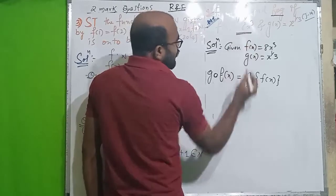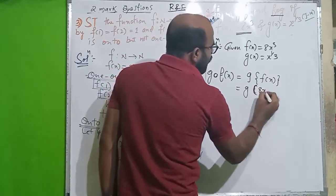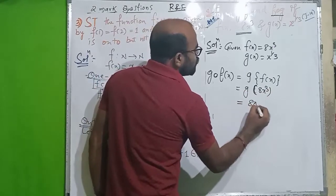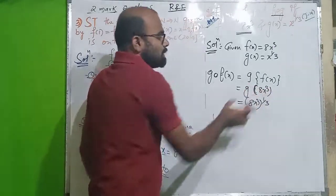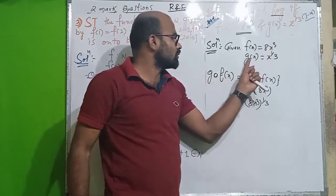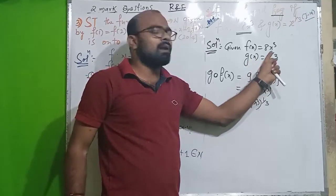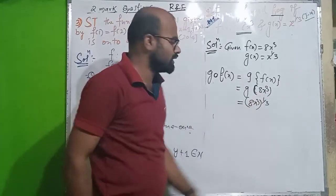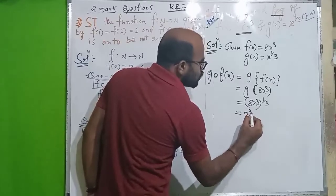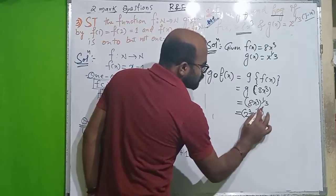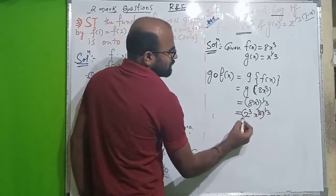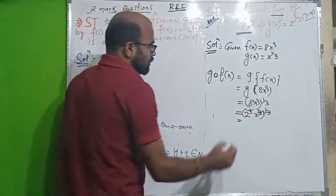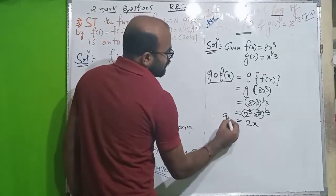Question 4: composition of functions — find gof and fog. Given f of x equals 8x cubed and g of x equals x to the power 1 by 3. For gof: g of f of x equals g of 8x cubed equals 8x cubed to the power 1 by 3. The cube and 1 by 3 cancel, giving gof of x equals 2x.